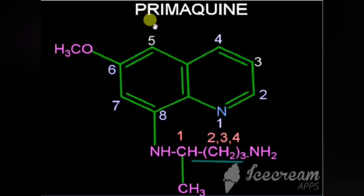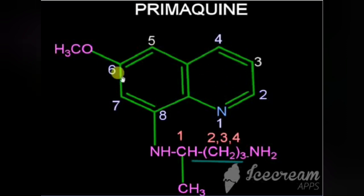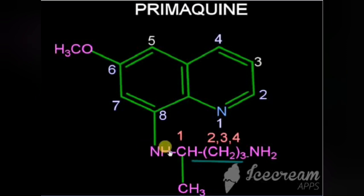Now we will see 8-aminoquinolines. Examples are primaquine and pamaquine. The structure of primaquine: it is an 8-aminoquinoline, having a quinoline nucleus with an amino group in the 8th portion connected to substituents — CHCH3, CH2 (×3), NH2 — and a methoxy group in the 6th portion.